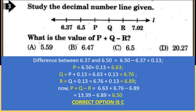Study the decimal number line given. What is the value of p plus q minus r? To find p + q − r, we first find the values of p, q, and r. The difference between 6.37 and 6.50 is 6.50 − 6.37 = 0.13. So the distance between two consecutive points is 0.13.